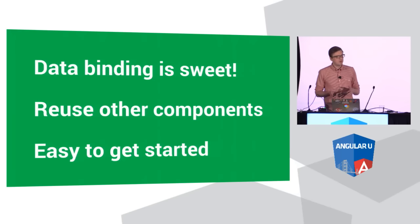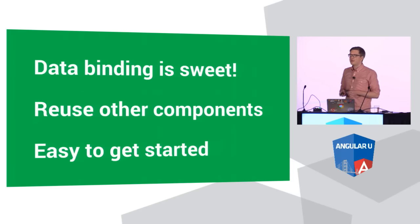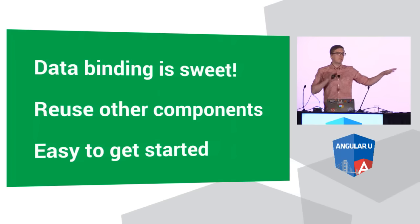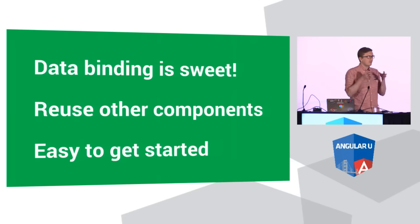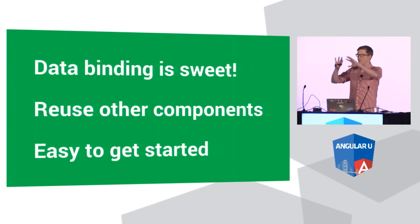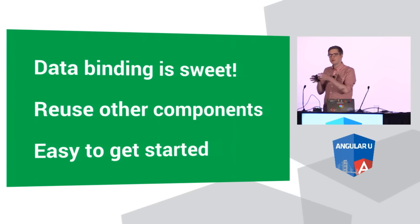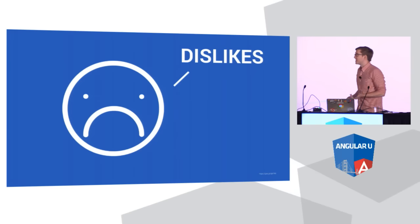What we found during this process was that developers had certain things they really liked about building components with Polymer. They thought the data binding system was pretty cool — it makes it very handy to bind inside of a component and cuts down a ton of boilerplate JavaScript. They liked that they could reuse other people's components — just grab any component off the shelf and mash it into their application. And they found it really easy to get started, because when you're focused just on building a single component, you don't have to know about an entire framework's world view. You're just focusing on a little bit of HTML, CSS, and JavaScript.